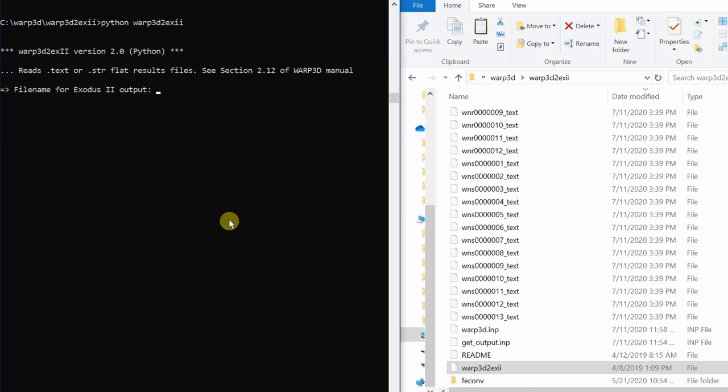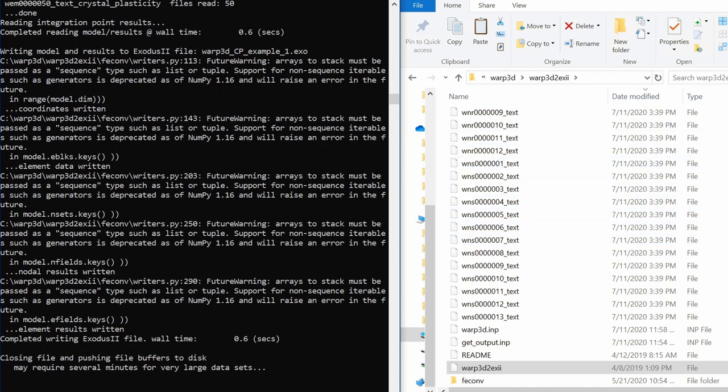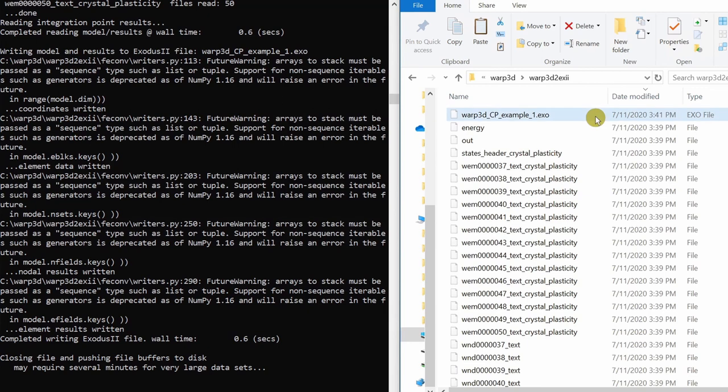Go into this directory from your command line. This directory has a python code named warp3d_to_exii. We will run that python code. When you run that python code, first it will ask you to name the output file. I am going to name the output file as warp3d_cp_example_one. Then it will ask you to tell the name of flat output file, which is warp3d_results.txt. And finally, it will ask you the path of that file, which is in this directory because we copied it over here. Then say no and no. And after this, it will create a .exo file.